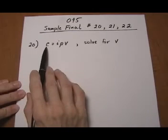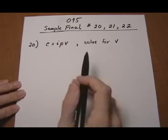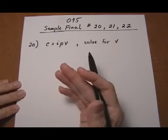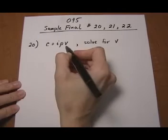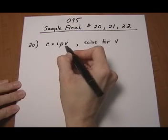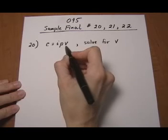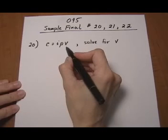For number 20, we have the equation C equals IPV, and we want to solve for V. Treat this just like you would solve any kind of linear equation. You want to look at the variable you're solving for, so we're solving for the V, and we want to clear away any other variables from it and constants and move everything else to the other side.